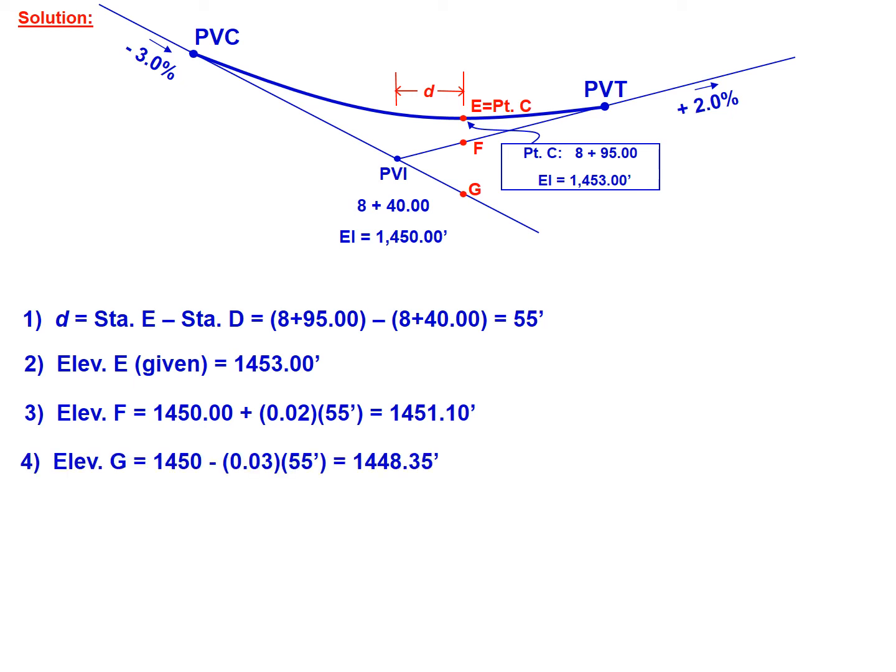For the elevation of G, we're going to start at PVI and go down 3% over 55 feet, which will give us an elevation at point G of 1448.35 feet.